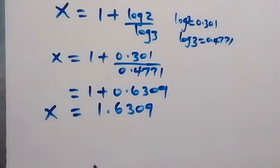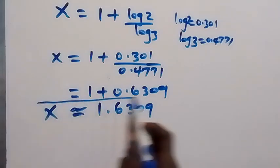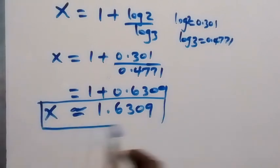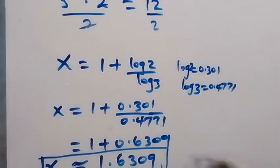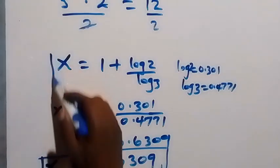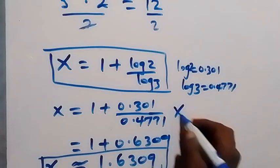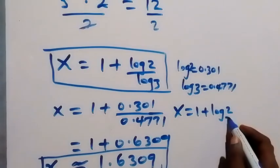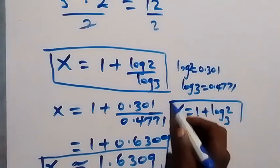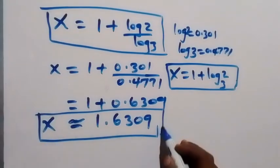So x will be approximately 1.6309. Of course, we can decide to stop here and leave our answer. That is, we can write it as x = 1 + log 2 to base 3 from change of base. Or we can put it to decimal this way and have it as an approximate value.